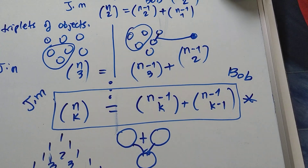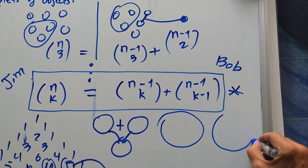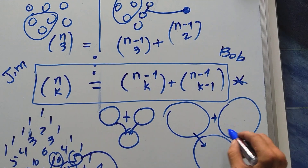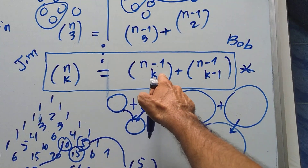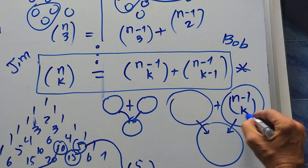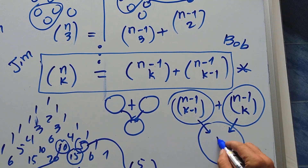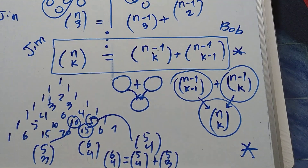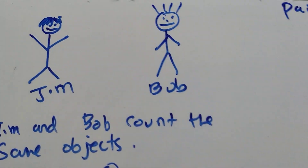This is exactly the rule for constructing Pascal's triangle. Plus this gives this — (n−1 choose k) plus (n−1 choose k−1) equals n choose k. We have discovered the rule for creating Pascal's triangle using a Jim and Bob combinatorial argument.